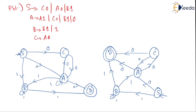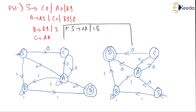I will write the productions now. Converting into right linear grammar starting with S: S on 0 goes to A, S on 1 goes to B. Then A on 1 goes to A, A on 0 goes to C, and since that is the final state, A on 0 gives a single 0. For B: B on 1 goes to B, B on 1 goes to final state, and B on 1 also goes to A.